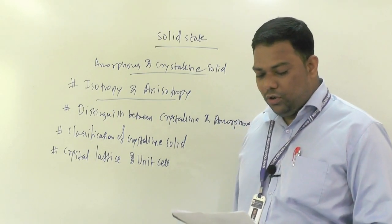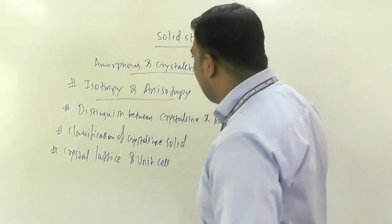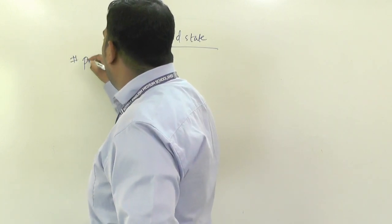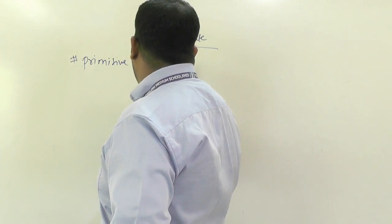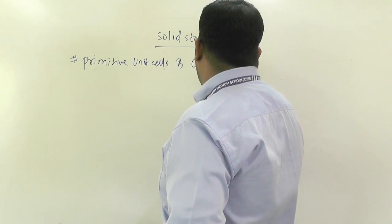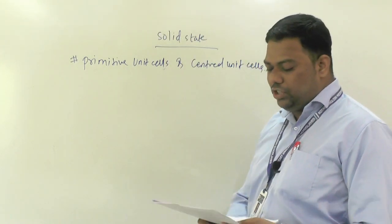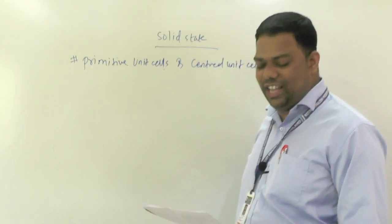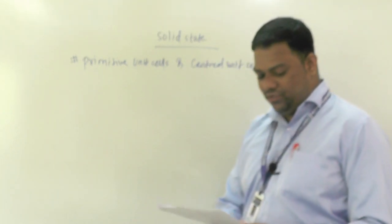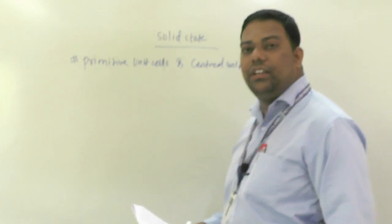After crystal lattice and unit cell, whatever possible unit cells are in two-dimensional — then primitive and centered unit cells. These are also very important. In primitive unit cells, particles are present only on the corner position of the unit cell. Centered unit cells contain one or more additional particles. Centered unit cells have three types: BCC, FCC, and end-centered unit cells.